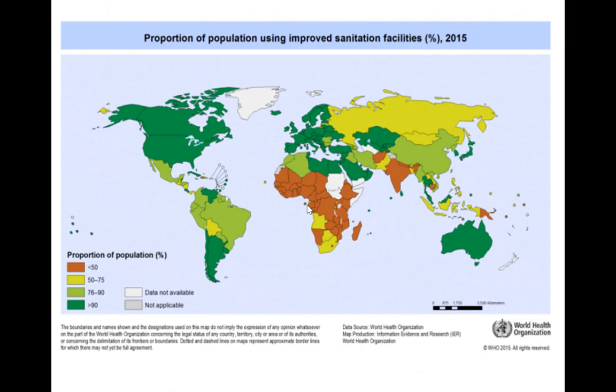Based on the chart, most of North America, Europe, Australia and western parts of South America and northern parts of Africa are using improved sanitation. On the other hand, most of sub-Saharan Africa and parts of South Asia still have less than 50% of the population living with improved sanitation facilities.